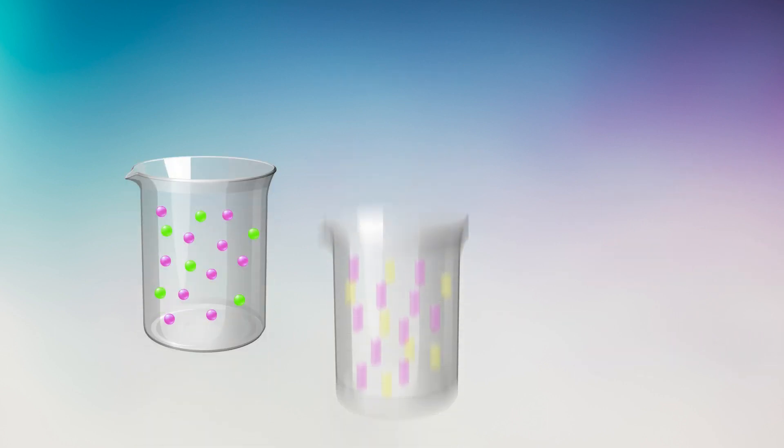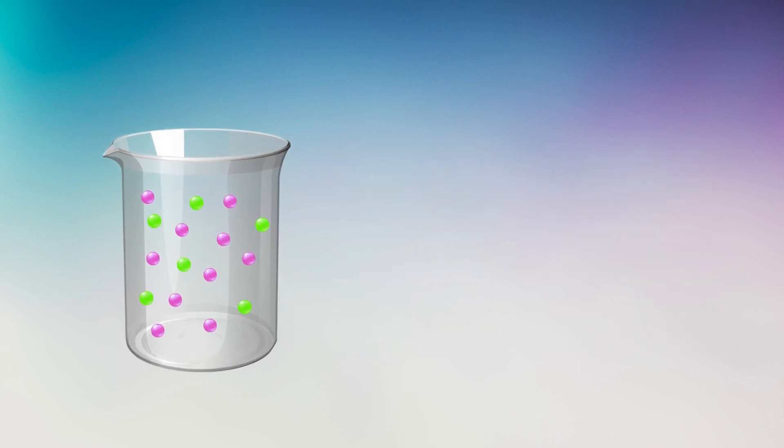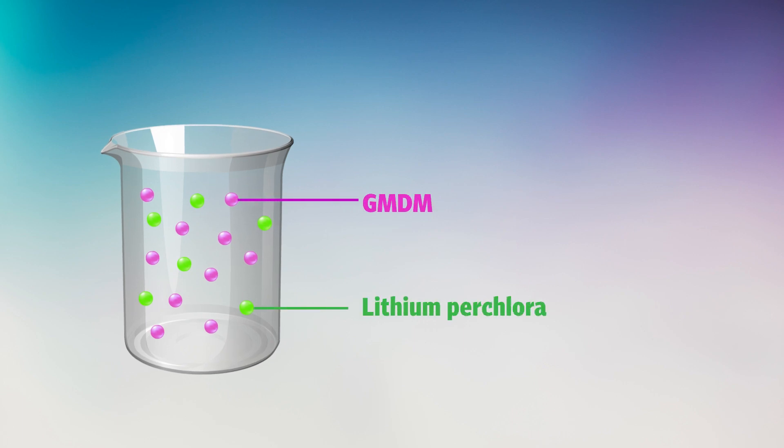Dr. Toyoda tested his polymerization reaction and Sol-gel method using many different formulations. He found that in its simplest form, the polymerization reaction could be achieved with only two components: GMDM and lithium-perchlorate, which provided a source of lithium ions.